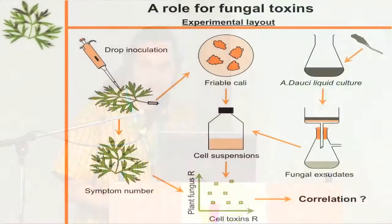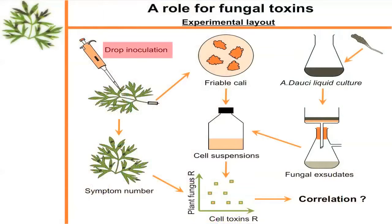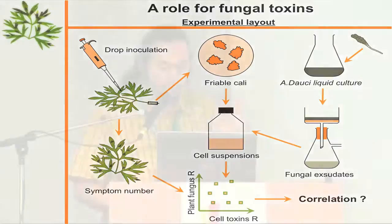Whole plant results were obtained using a drop inoculation technique, where you inoculate each leaf with a certain number of drops and you know the volume of each drop. So you know how many conidia of the fungus you have on the leaf, and you can compare the number of symptoms with the number of conidia — a way to measure plant resistance as precisely as possible.